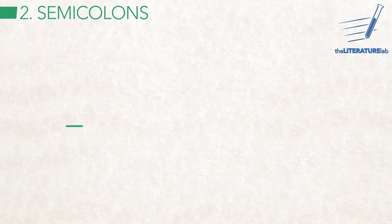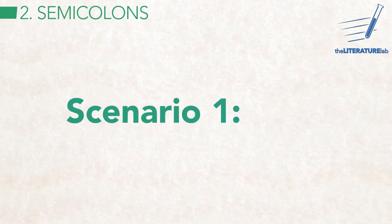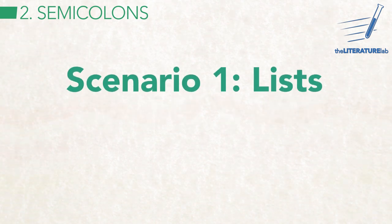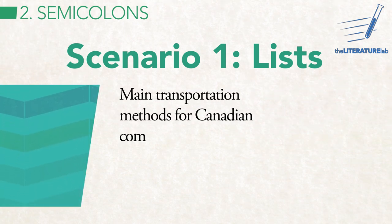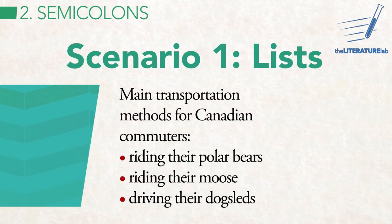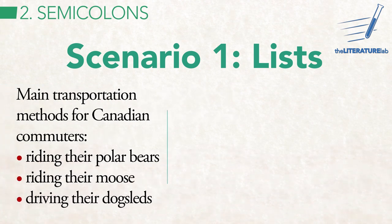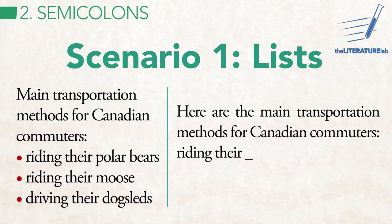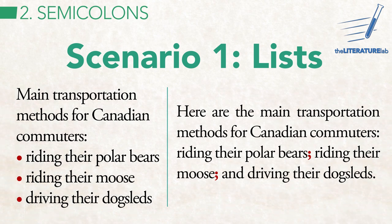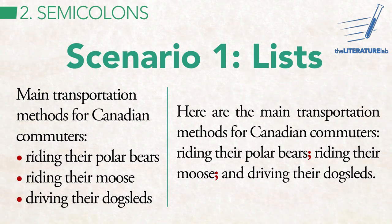There are two main scenarios for using a semicolon. The first is when separating multi-word items in a list. Because the list items are three or four words long, semicolons help to separate them, like bullets did. You could use commas instead, but semicolons are stronger.